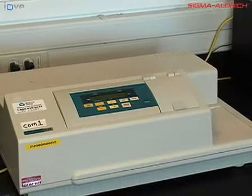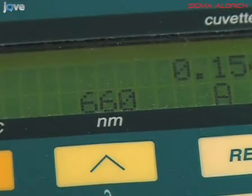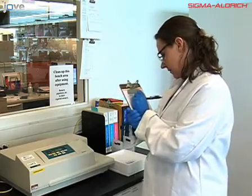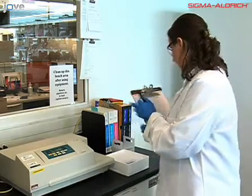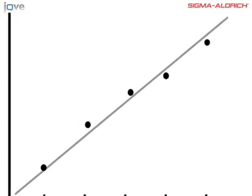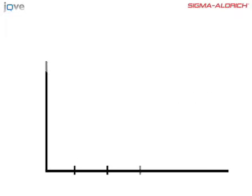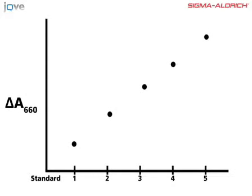The absorbance of our samples is measured by a spectrophotometer using a wavelength of 660 nanometers. The light path is set to one centimeter. Record the absorbance values for the standards, standard blank, the different test samples, and test blank. Once all of the data has been collected, we are ready to create our standard curve. In order to generate the curve, the difference in absorbance between the standard and standard blank must be calculated. This is the absorbance value attributable to the amount of tyrosine in the standard solutions. After this simple calculation, we create our standard curve by plotting the change in absorbance of our standards on the y-axis versus the amount in micromoles for each of our five standards on the x-axis.